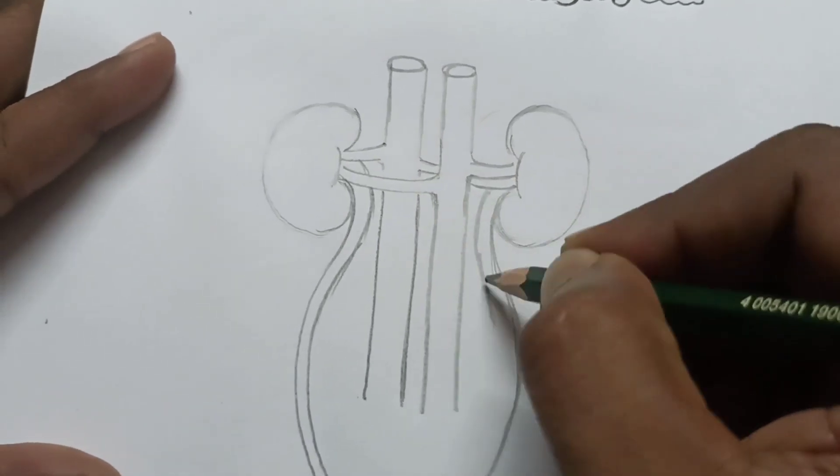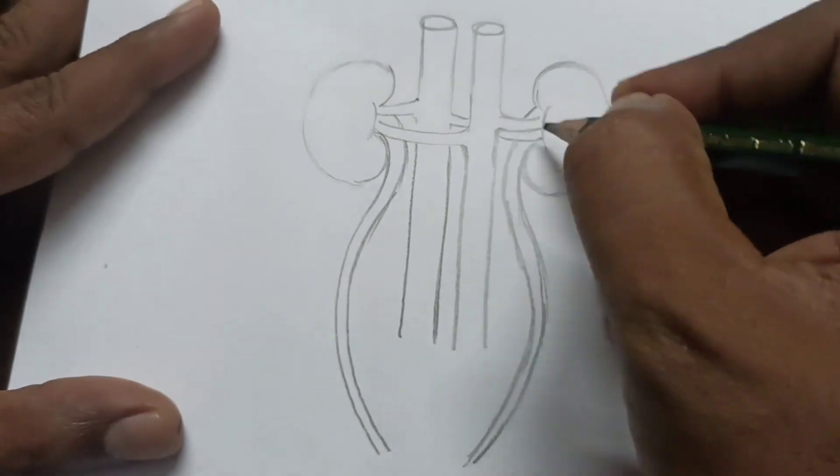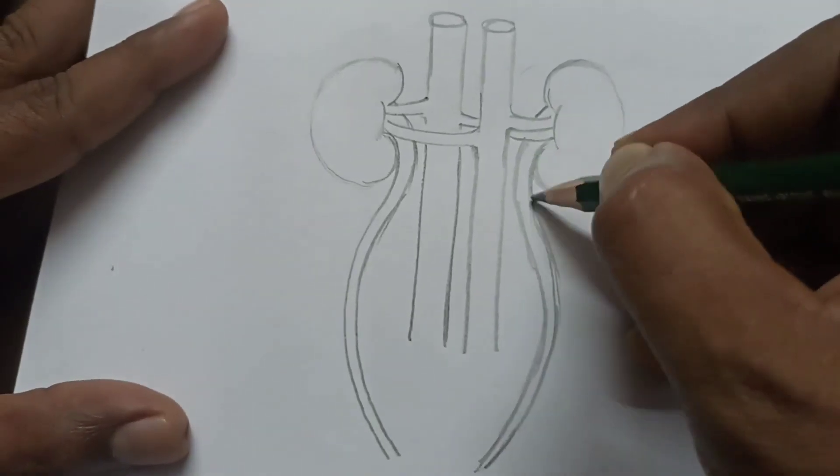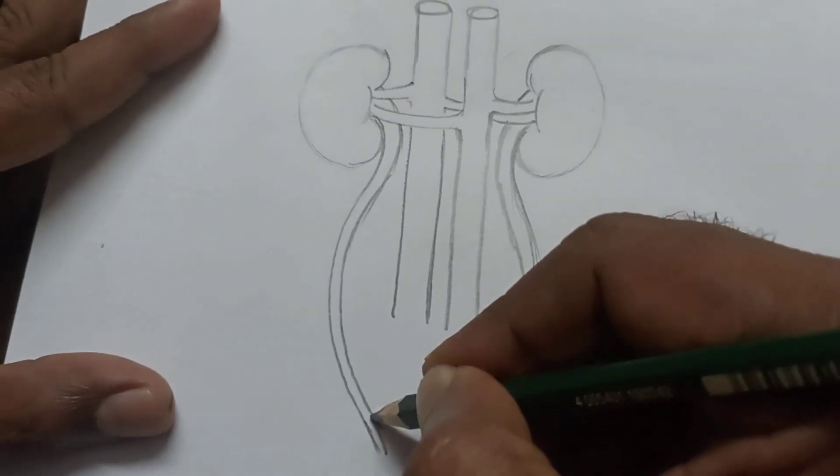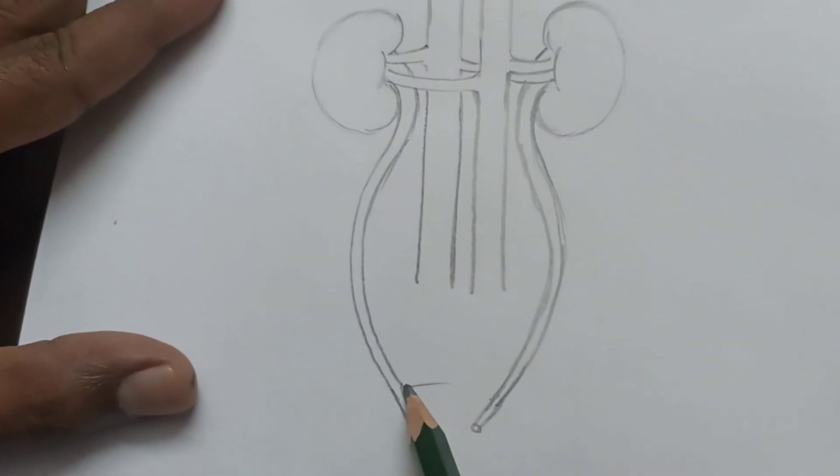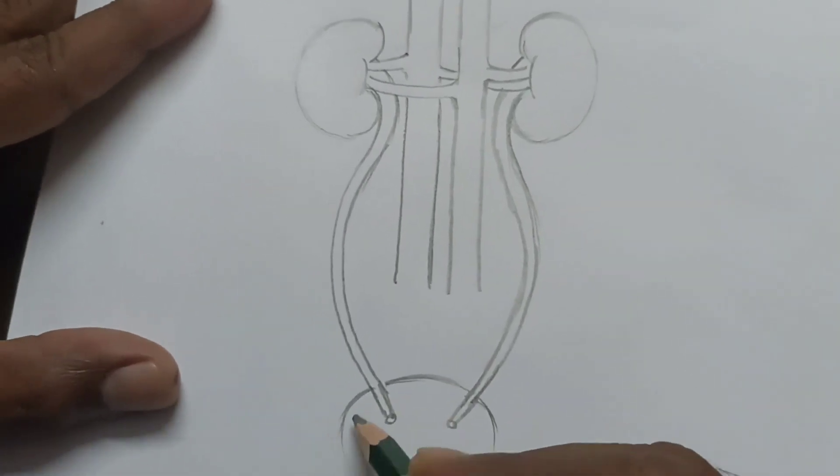This is the left ureter which comes from the left kidney. These are the ureters which open in the urinary bladder. This is the urinary bladder.